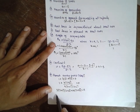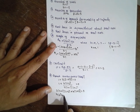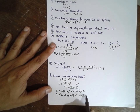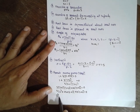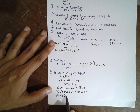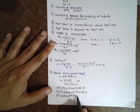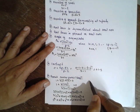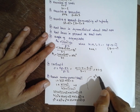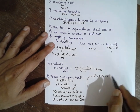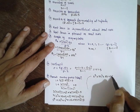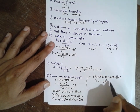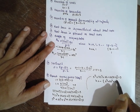Expanding: s cubed plus 2s squared plus 2s plus s plus 2 plus K(s plus 6) is equal to 0. Further simplifying: s cubed plus 3s squared plus 2s plus Ks plus 6K is equal to 0. Therefore K is nothing but minus(s cubed plus 3s squared plus 2s) divided by (s plus 6).